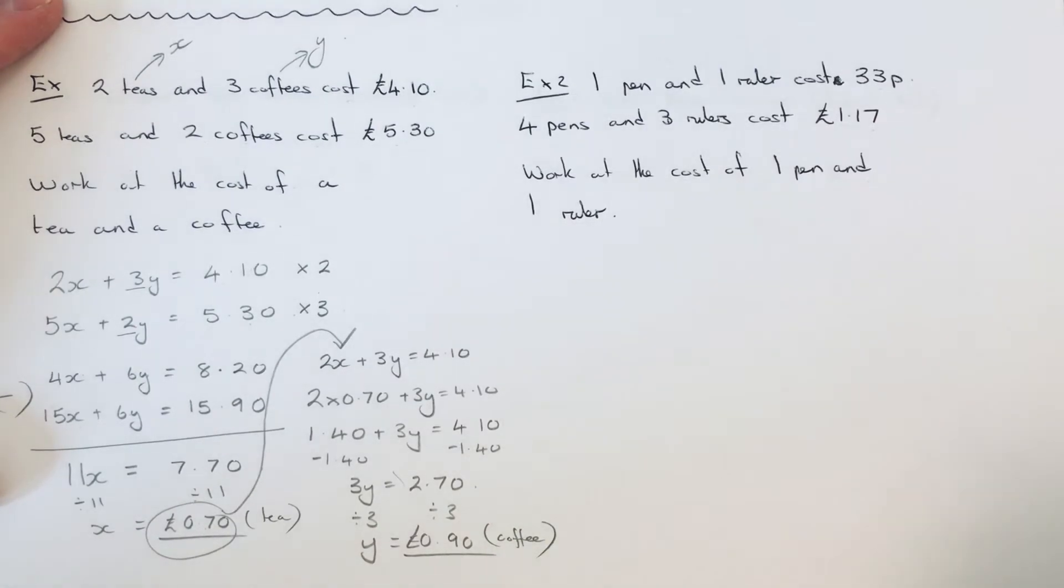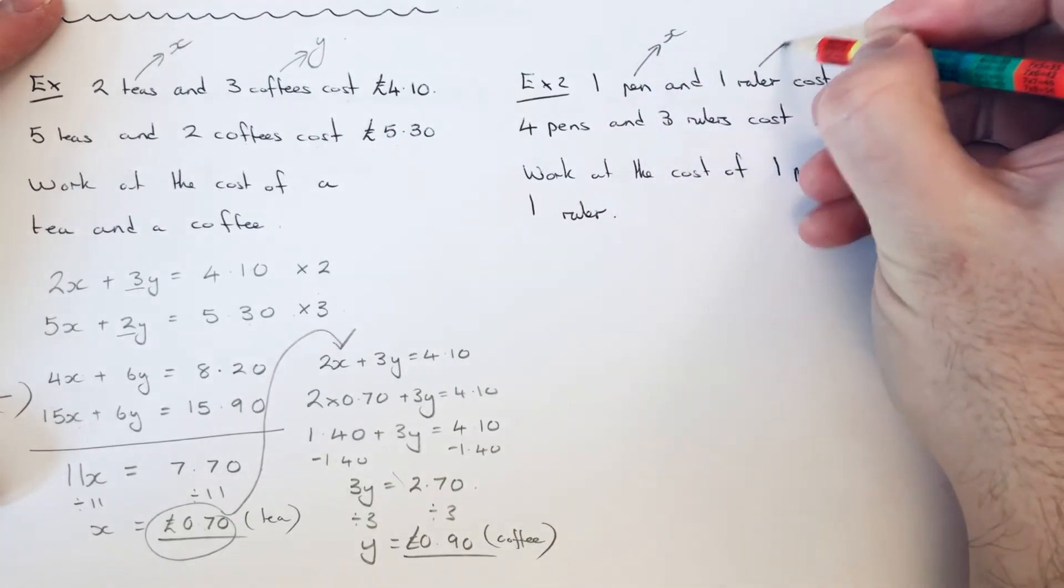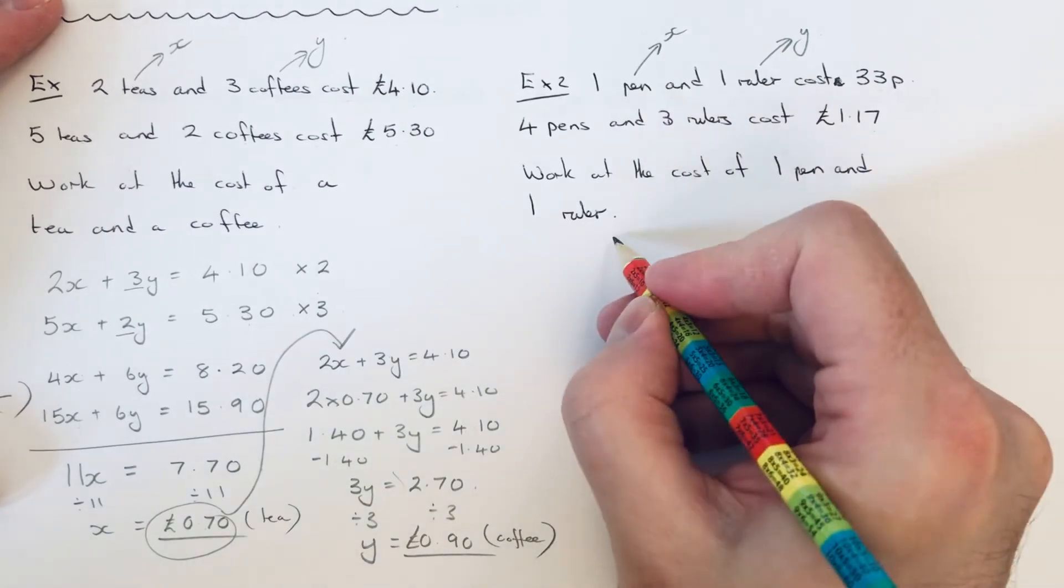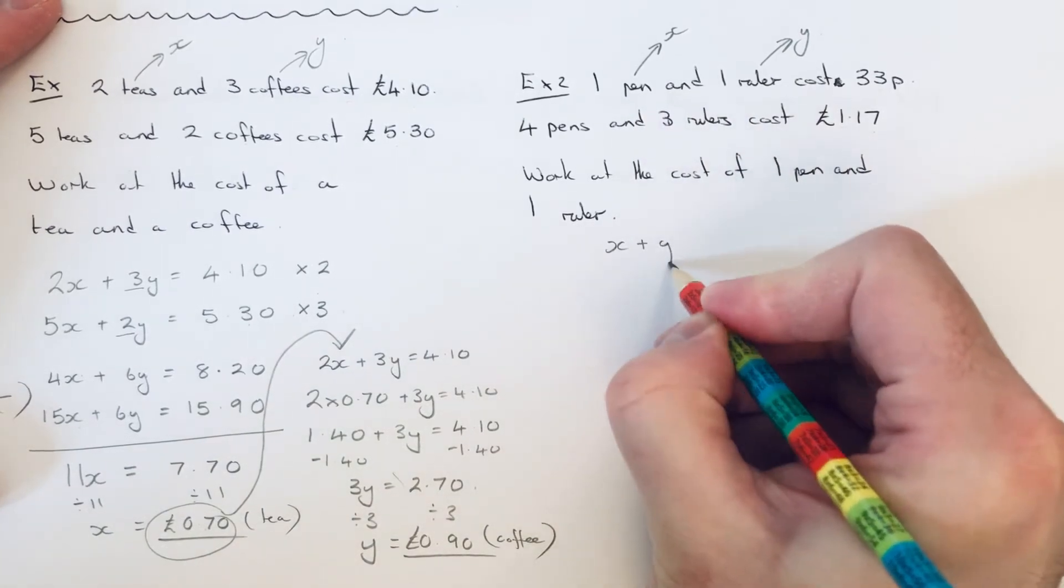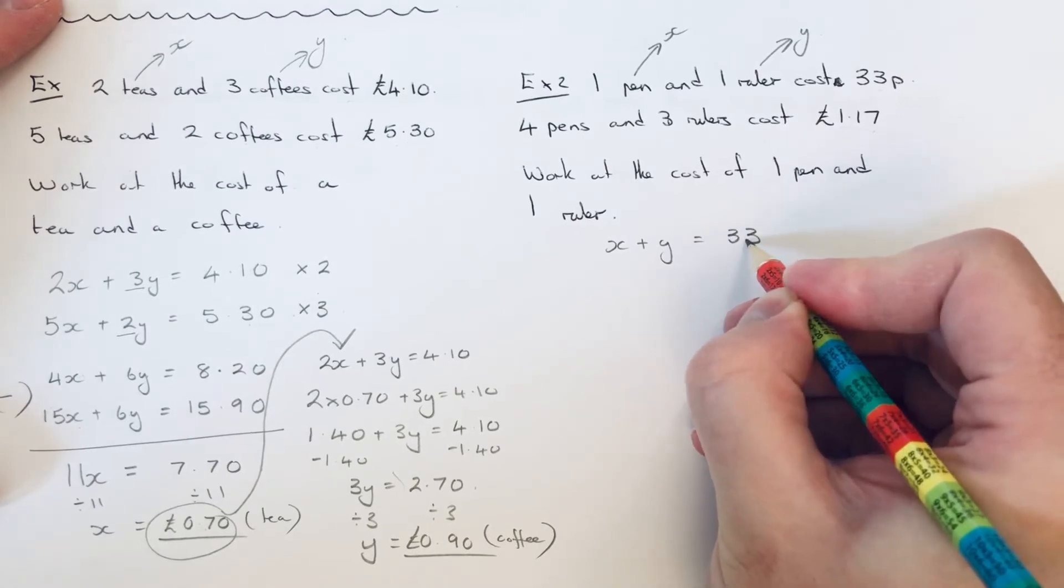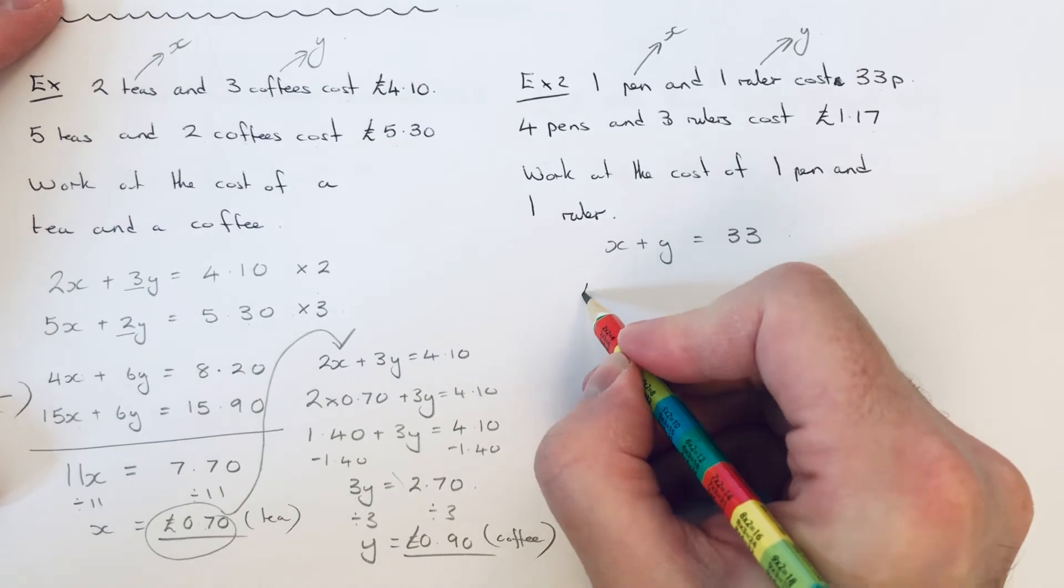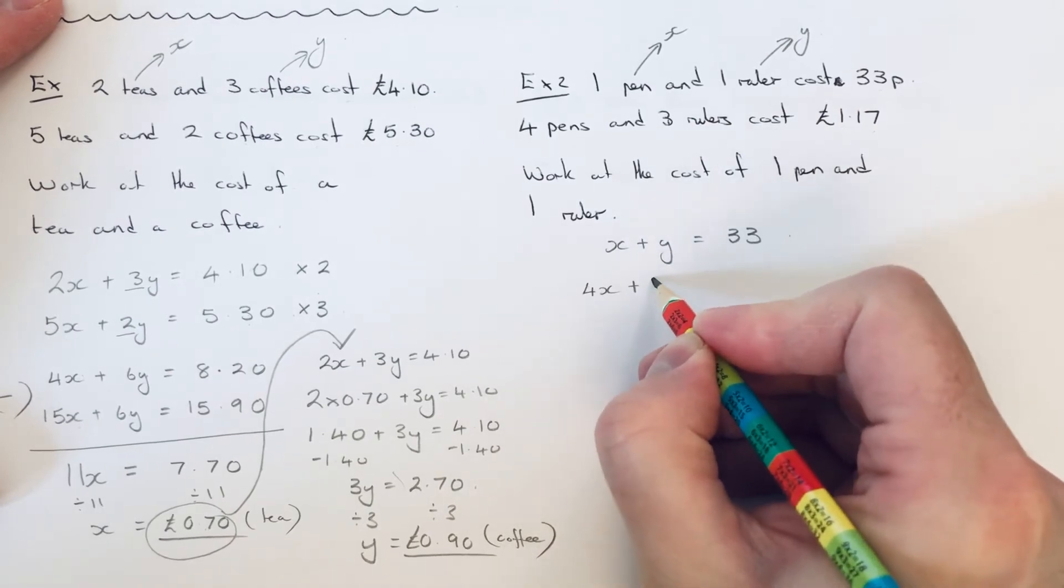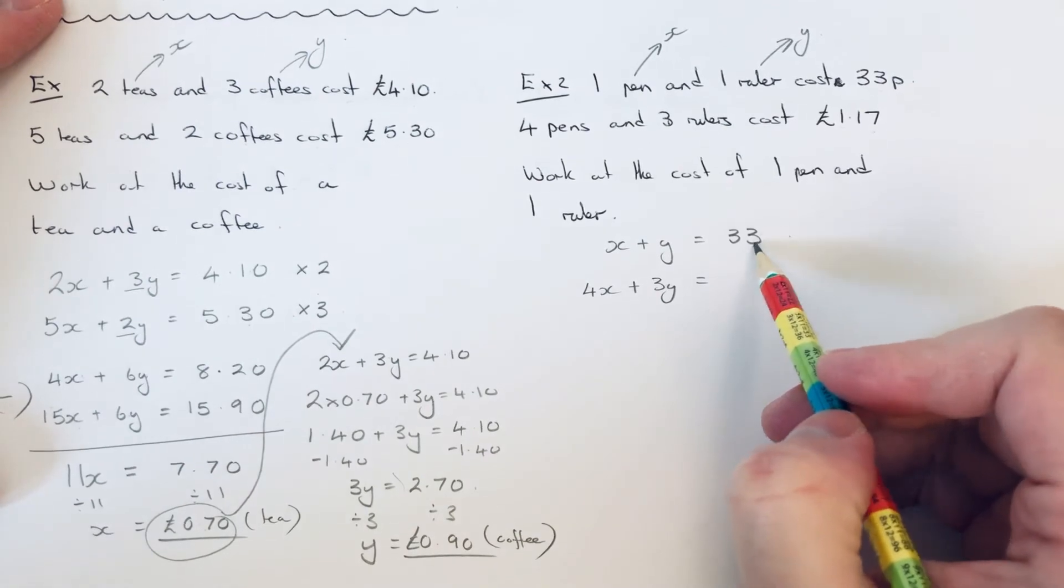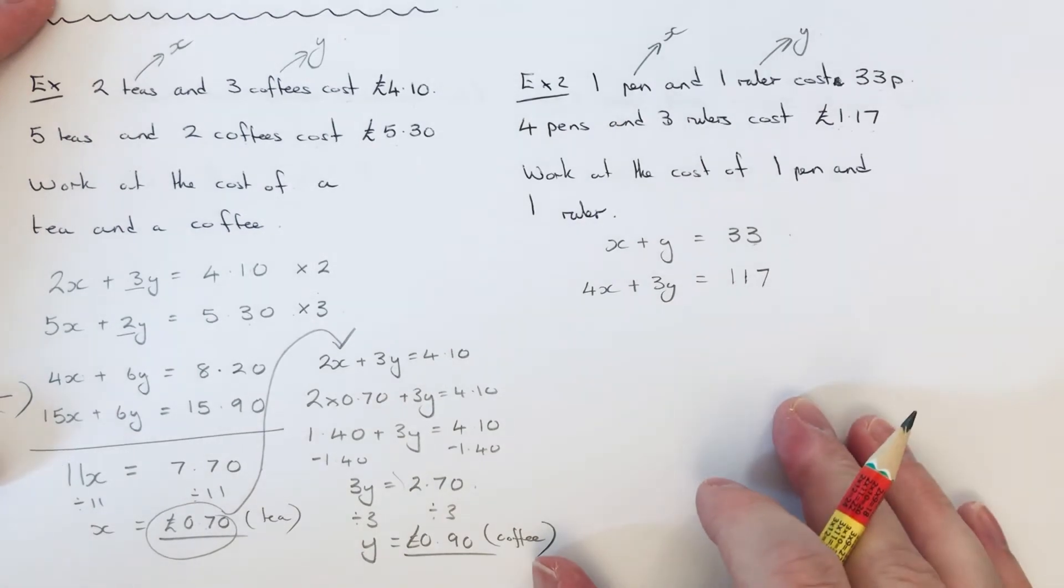So again let's write down our two equations. So let's say the cost of a pen is x and the cost of a ruler is y. So our first equation would be x plus y equals 33. And our second equation would be 4x plus 3y equals... So since I did the first one in pence, I'm going to put that one in pence as well. So it's 117p.